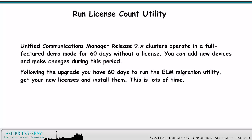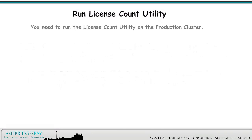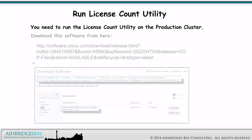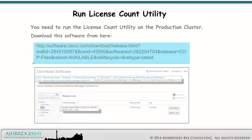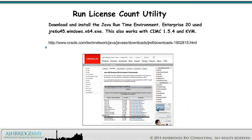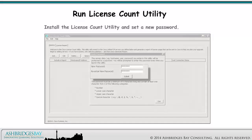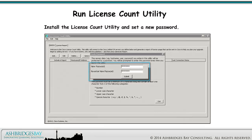Unified Communications Manager Release 9.x clusters operate in a full-featured demo mode for 60 days without a license. You can add new devices and make changes during this period. Following the upgrade, you have 60 days to run the ELM Migration Utility, get your new licenses, and install them — this is lots of time. You need to run the License Count Utility on the Production Cluster. Download and install the Java Runtime Environment; Enterprise 20 used jre6u45.windows.x64.exe. This also works with CIMSE 1.5.4 and KVM. Install the License Count Utility, set a new password, and now you can run the LCU.